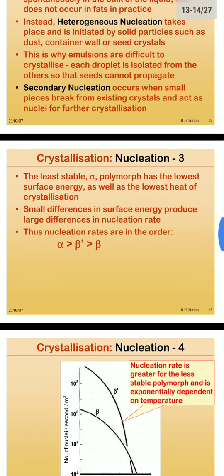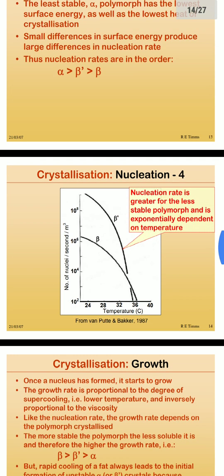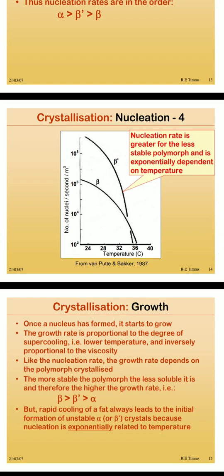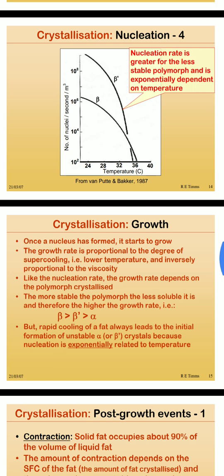Nucleation rate is greater for the less stable polymorph and is exponentially dependent on temperature. Once a crystal is formed, it starts to grow, and the growth is proportional to the degree of super cooling and inversely proportional to the viscosity — the less the viscosity, the more liquefied it is, and the greater the crystal growth. Like the nucleation rate, the growth rate depends on the polymorph. The more stable the polymorph, the less soluble it is. Beta has the highest growth rate, followed by beta-prime and then alpha.